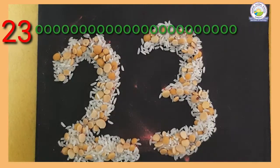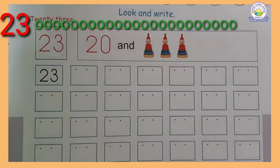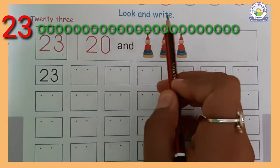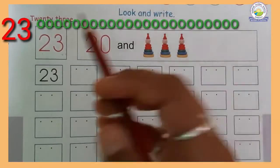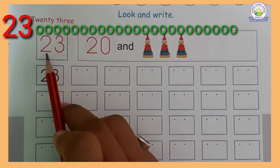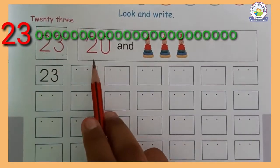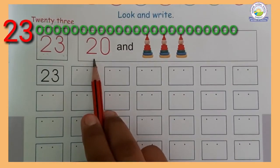Now let's write on the notebook. So see here. Look and write. Now this is number 23. This is 20, after 20...